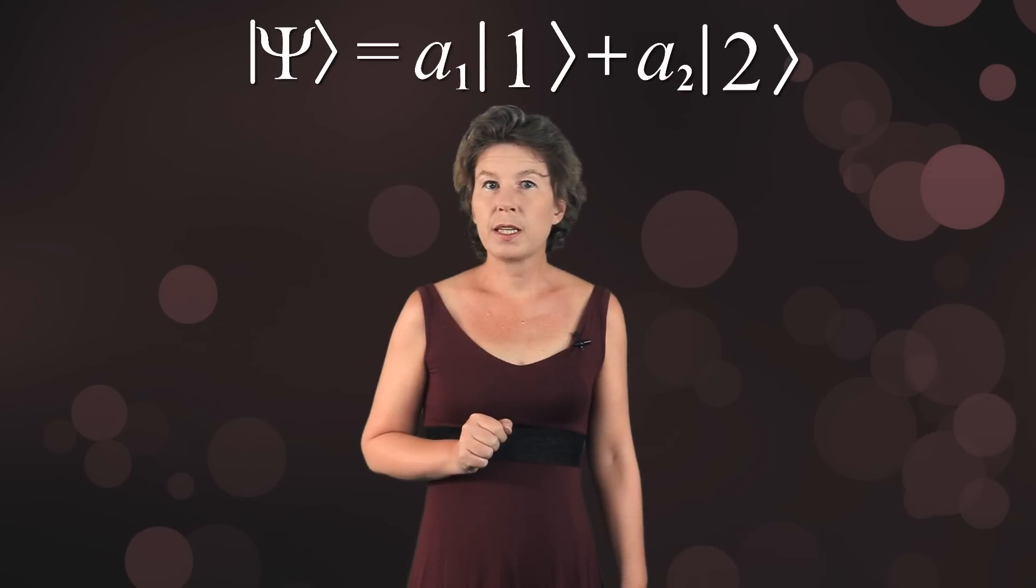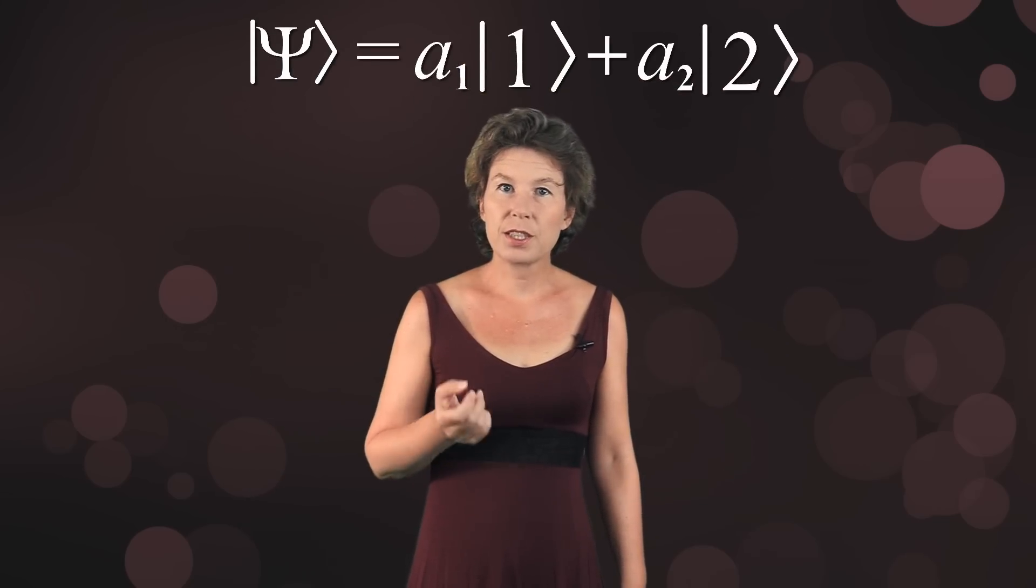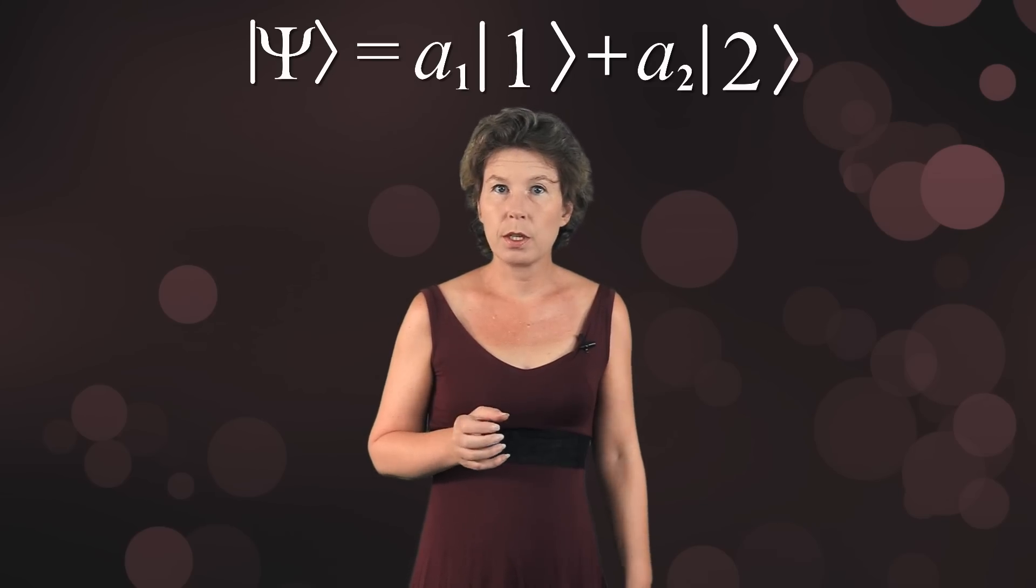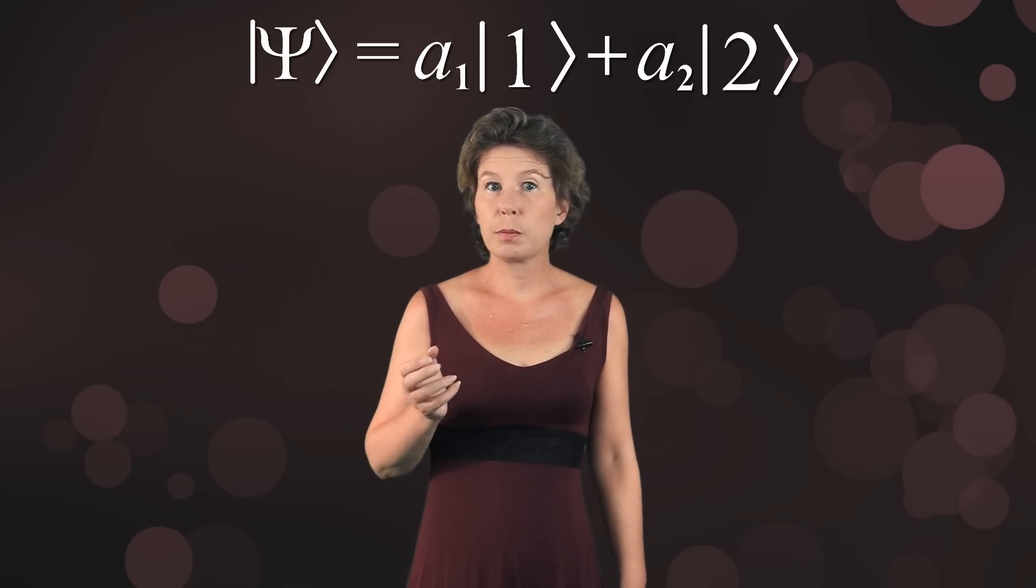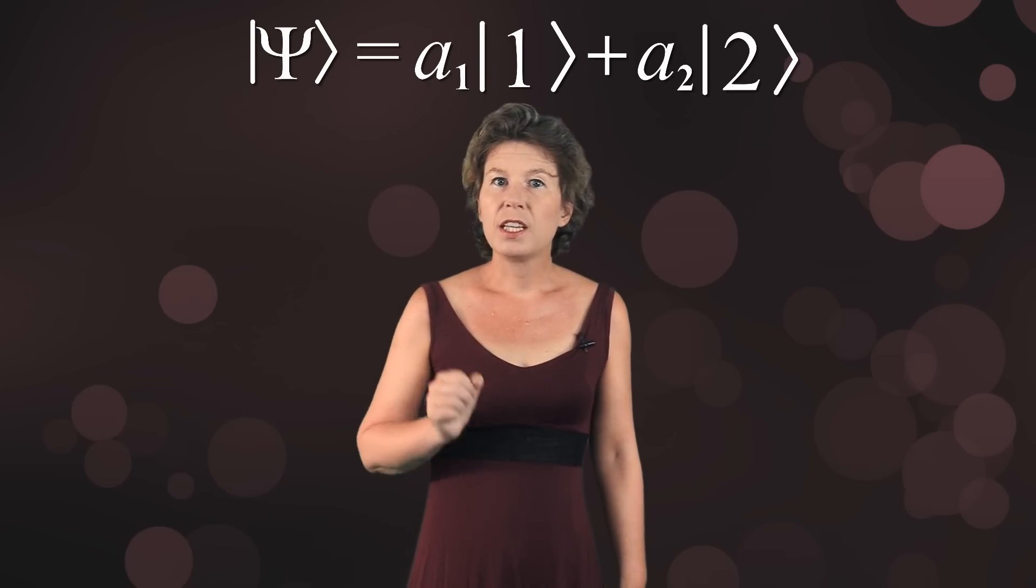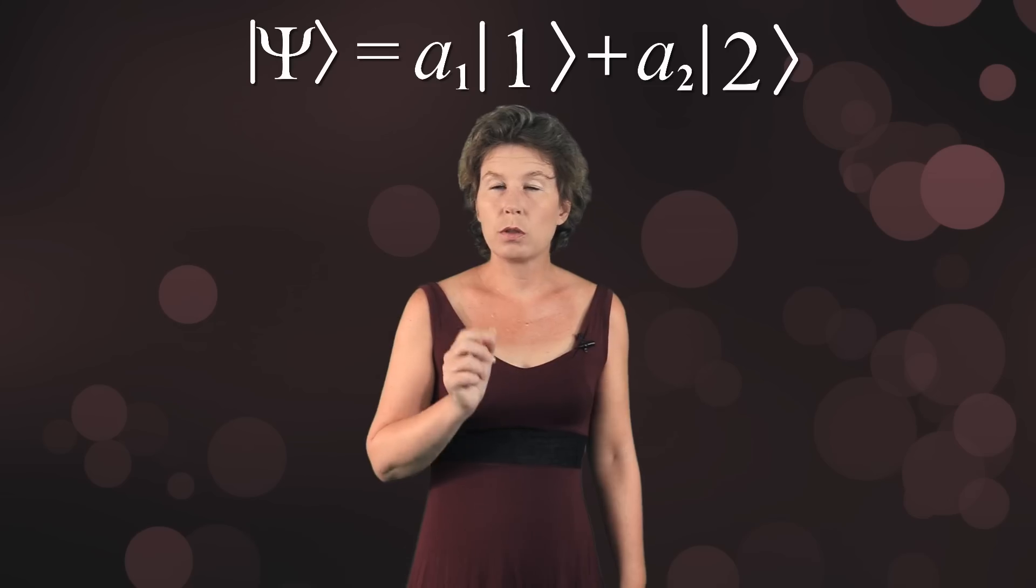The weird thing about quantum mechanics now is that if you have a state that is in a superposition of possible measurement outcomes, say spin plus one and spin minus one, you never measure that superposition. You only measure either one or the other.